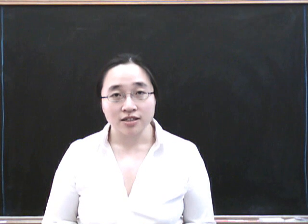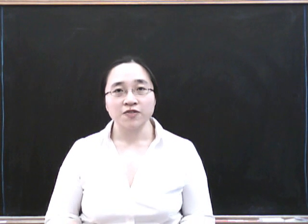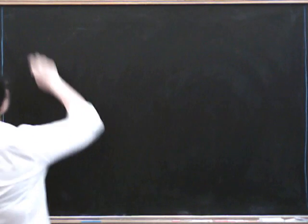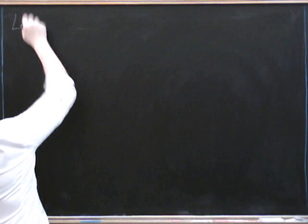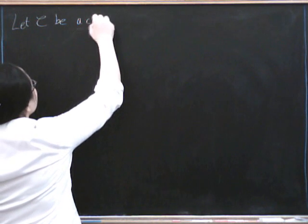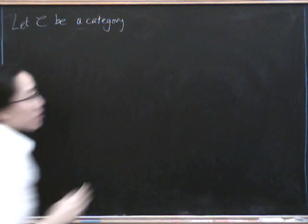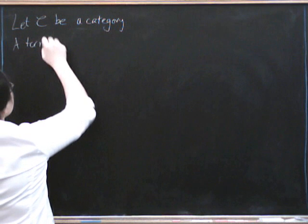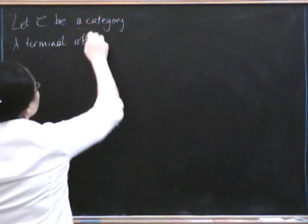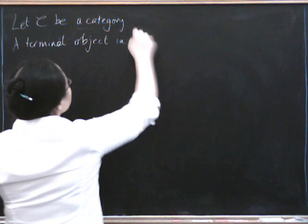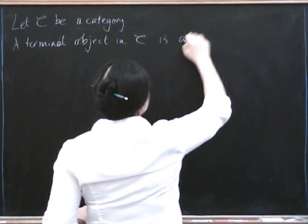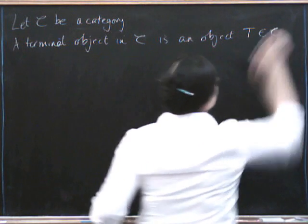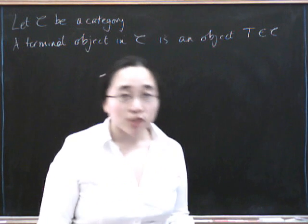The most basic kind of limits and co-limits are the ones we'll do first, and these are terminal and initial objects. So let's start with a category C. Let C be any category. We'll start with terminal objects. A terminal object in C is some object T. So it's an object and now it has a universal property. And what's its universal property?